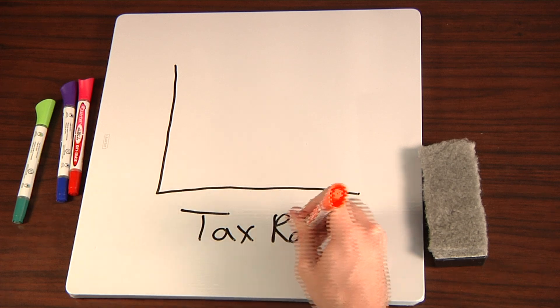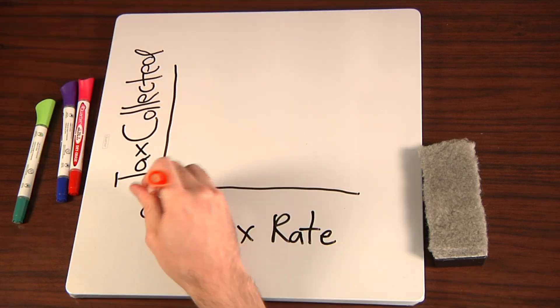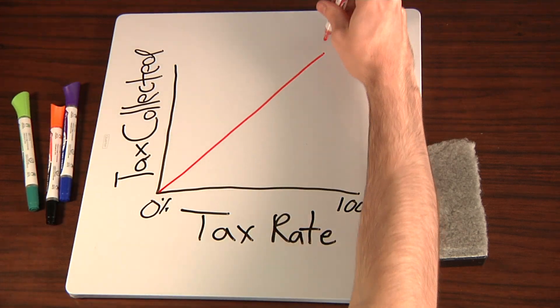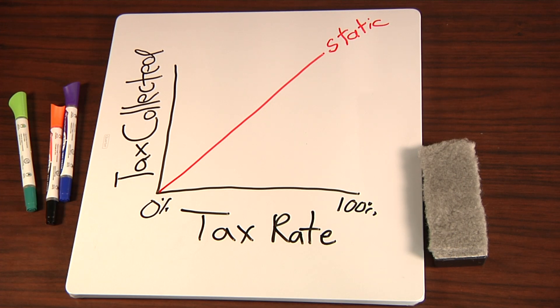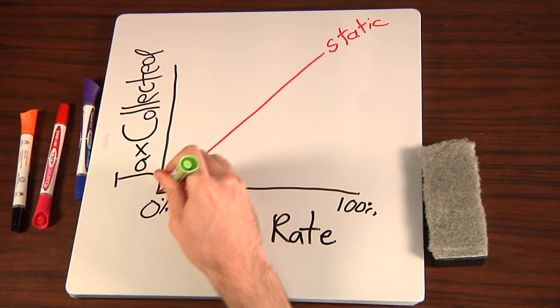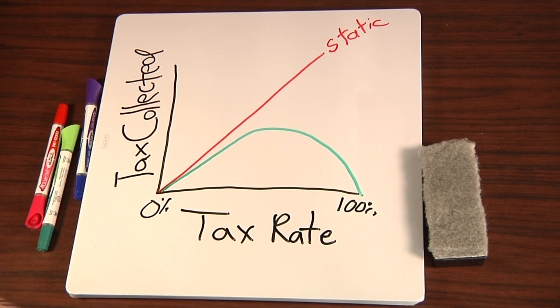Let's first look at how government approaches taxes. The static model shows that as tax rates increase, tax revenue increases proportionately. There's no change to behavior, nor any real change to the economy. But this flies in the face of the axiom that if you tax something, you get less of it.